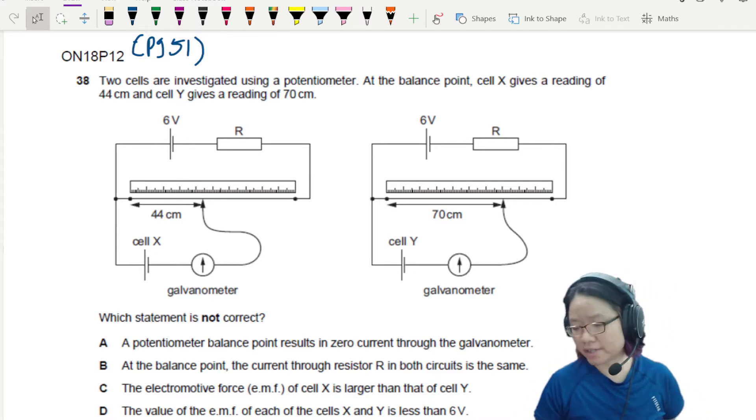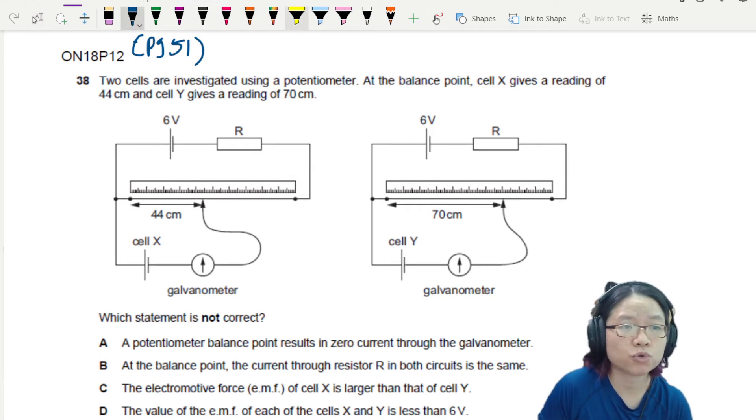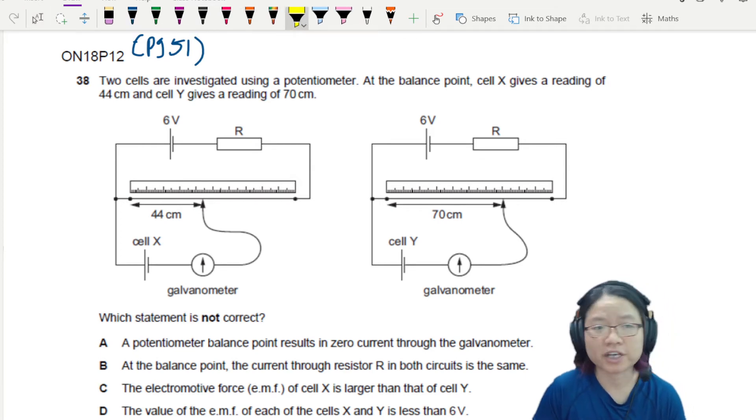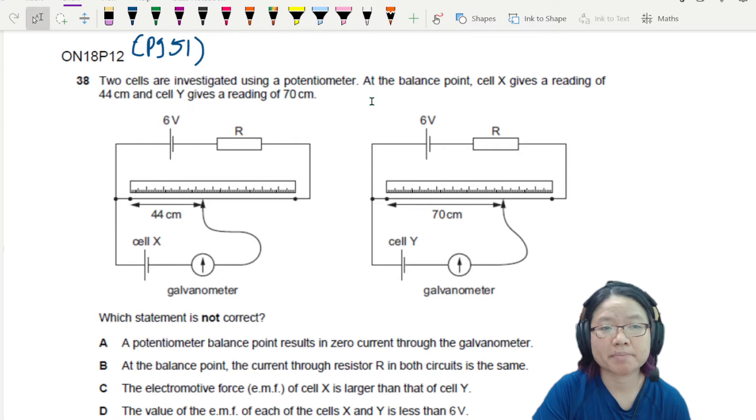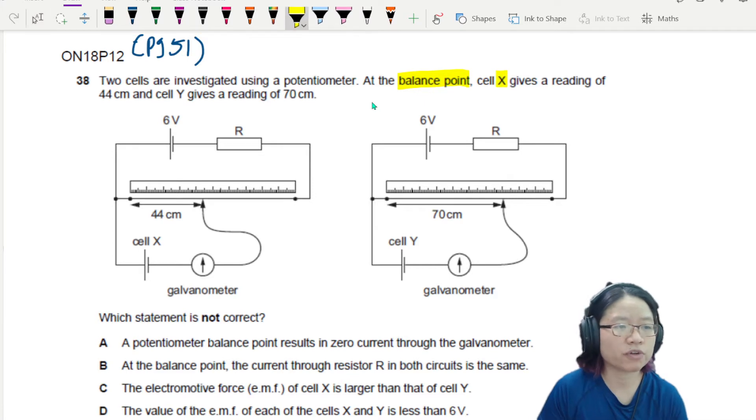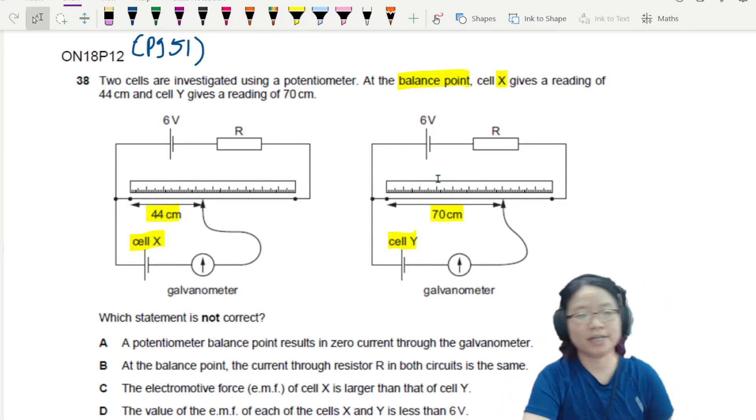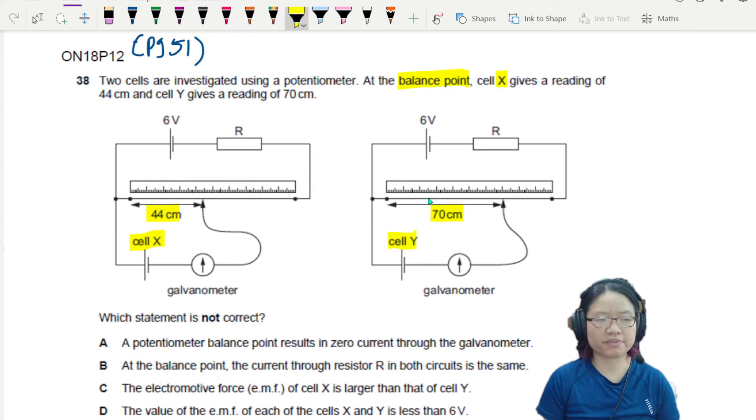Here's another potentiometer question. In these two circuits, we are investigating two different cells using a potentiometer. At the balance point, so these two are at balance point already, cell X gives a reading of 44 cm and cell Y gives a reading of 70 cm. Which statement is not correct? We want to find the incorrect statement. Let's look at them one by one.